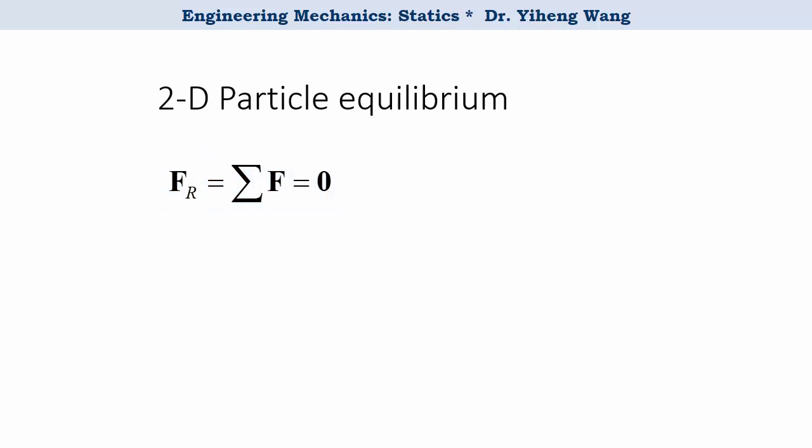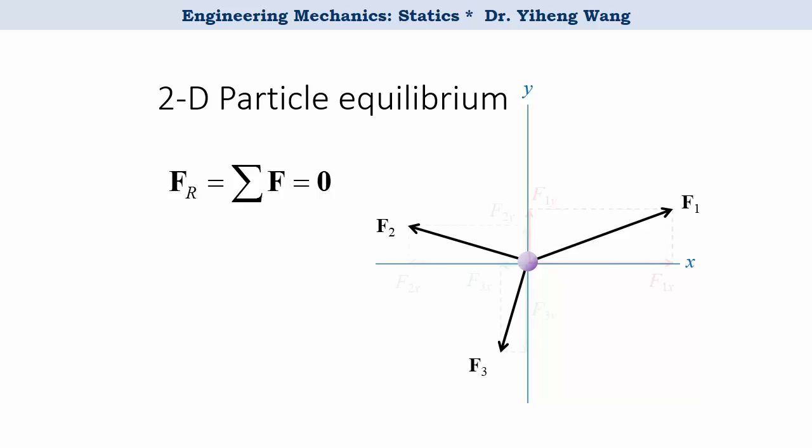For a 2-D problem, since the forces are within the same x-y plane, and therefore each force can be resolved into x and y components, we can write the vector equation into two scalar equations instead. That the resultant force along the x direction equals to zero, and the resultant force along the y direction must equal to zero as well. And we know that with two independent equations we can solve for a maximum of two unknowns.